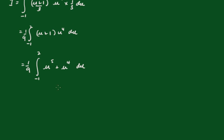So on integrating, we get 1 ninth of u to the 6th over 6 plus u to the 5th over 5, evaluated between 2 and minus 1.